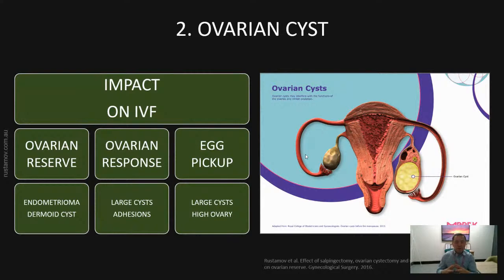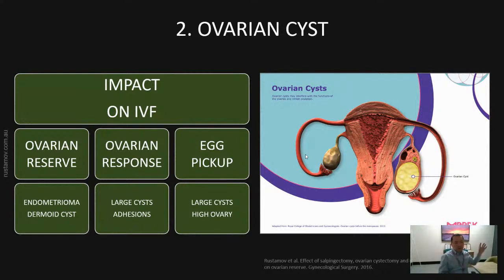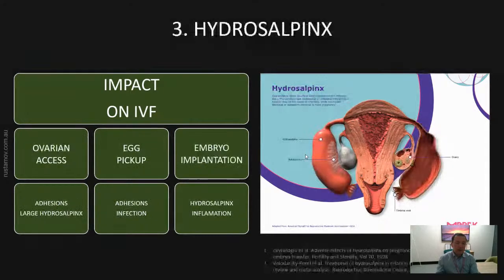Ovarian cysts can also reduce ovarian response to stimulation because large ovarian cysts may occupy most of the space in the ovary, leaving not enough room for the follicles and eggs to grow. Large ovarian cysts can also make it difficult to access ovaries during egg pickup because they may displace the ovary. They can also cause infection, so we give antibiotics to reduce the risk of infection after egg pickup.